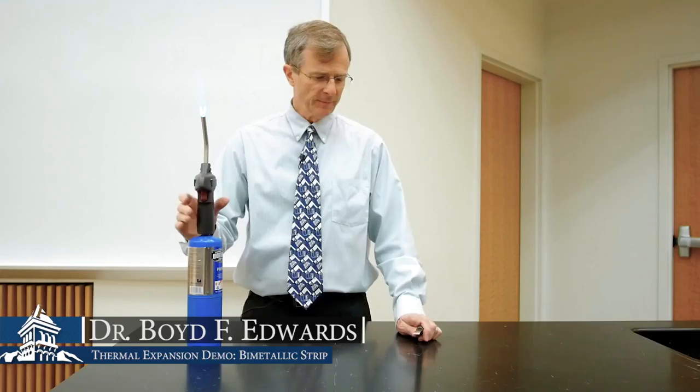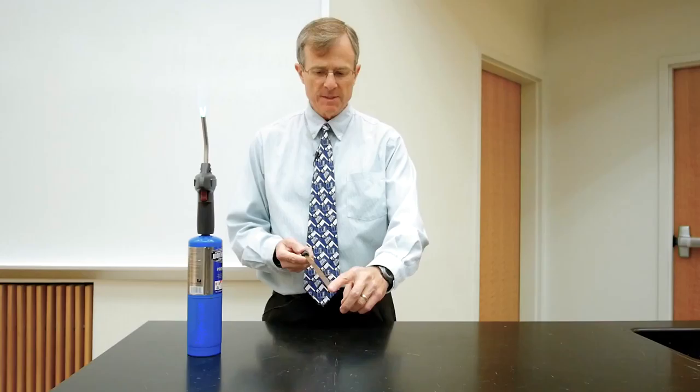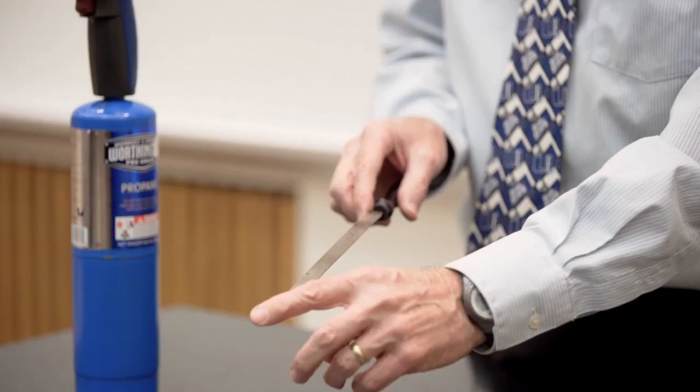This is a demonstration of thermal expansion. What I have here is a bimetallic strip with one type of metal on one side. It looks to be brass or bronze and another type of metal on the other side.